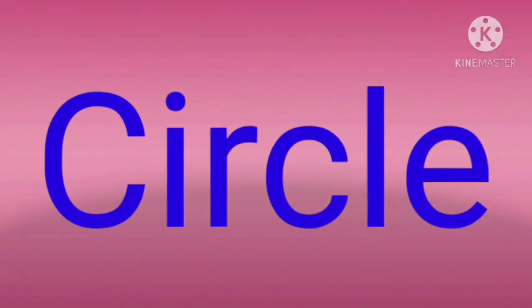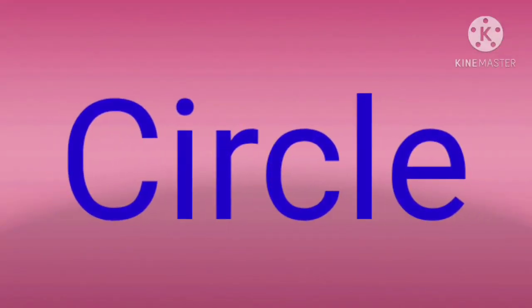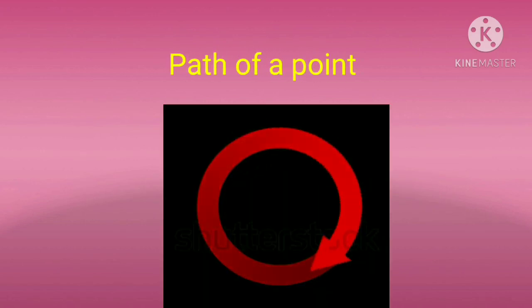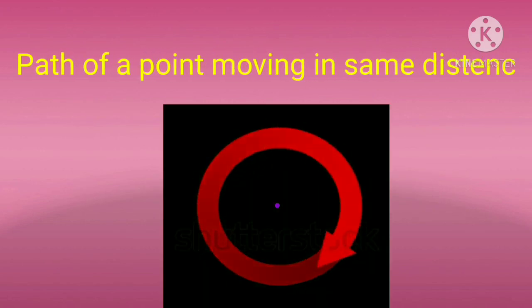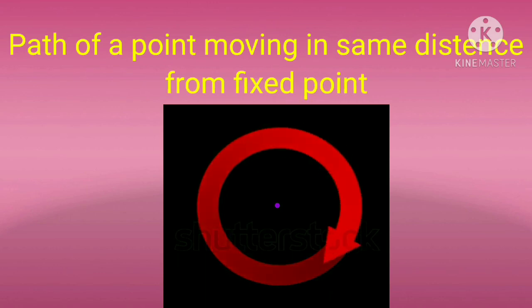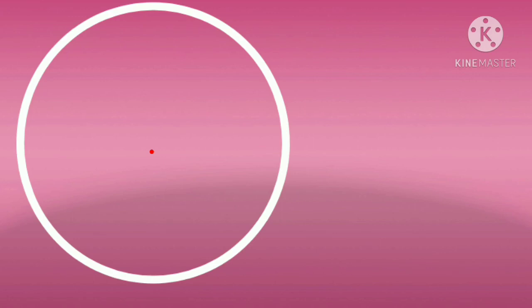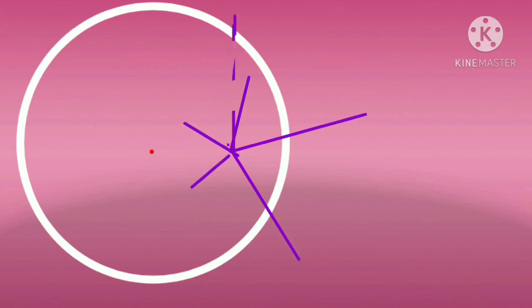The next topic is circle. A circle is the path of a point moving at the same distance from a fixed point. The fixed point is the center of the circle. Every point on the circle is at equal distance from the center.